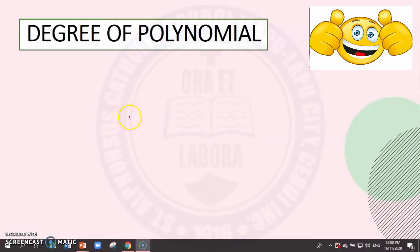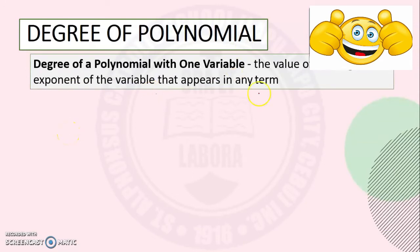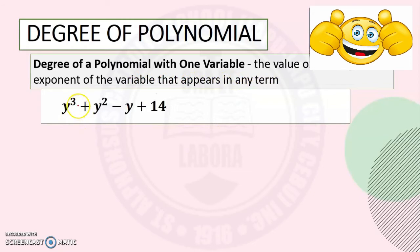Now let's talk about the degree of a polynomial. When we say degree, it is the largest exponent or the highest exponent of the given polynomial. If we are given a polynomial with only one variable, we find the degree by determining the largest exponent that appears in any term. For example: y cubed plus y squared minus y plus 14. There is only one variable, y. The largest exponent is 3, so this polynomial has a third degree.